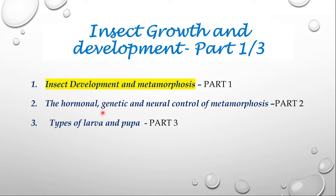In the second part I will talk about the hormonal, genetic and neural control of metamorphosis, and in the third part I will talk about the types of larvae and pupae found in different insects. Let us begin with insect development.